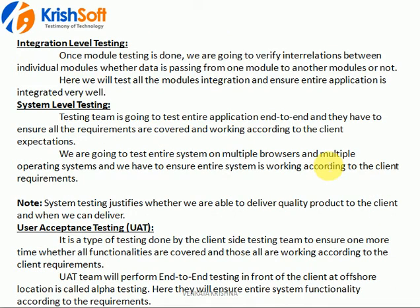The second level is functional integration level testing. In module level testing you tested each feature independently; in integration level testing you integrate one feature with another and verify whether functionality flows from one feature to the other. For example, with Gmail — you send a mail to your friend, and whether he receives it or not is the second part. Both parts integrated and verified together is integration testing. Whatever features you have, all of them are integrated to ensure data transfers properly from one module to another.